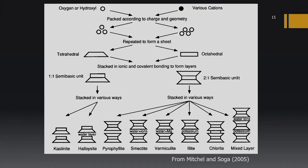Clay minerals are formed by stacking tetrahedral and octahedral units — composed of oxygen, hydroxyl ions, and cations like silicon, aluminum, or magnesium. When stacked in a 1:1 arrangement, we get kaolinite and halloysite. A 2:1 arrangement produces smectite, vermiculite, illite, and mixed-layer minerals. A 2:2 arrangement produces chlorite. We will now examine how each of these minerals is formed.